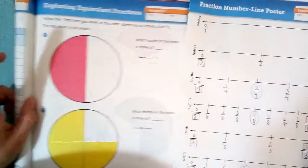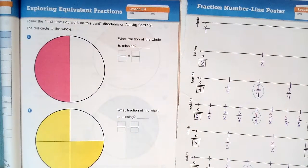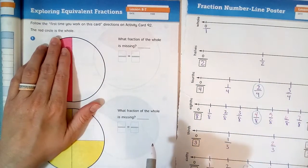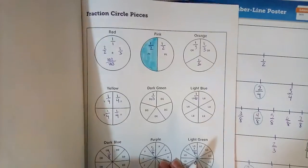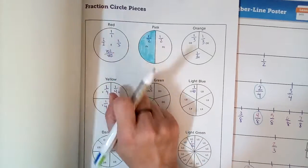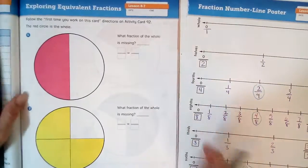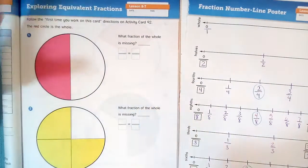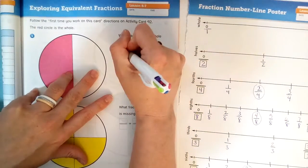Here's my fraction chart, my fraction poster on a number line. That will be helpful. It says what fraction of the whole is missing? It's telling us right here the red circle is the whole. The red circle in the very back of our stuff shows here, in the back of our Math Journal, the red circle is a half. So what is missing? If the red circle is the whole, one half is missing.